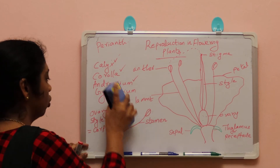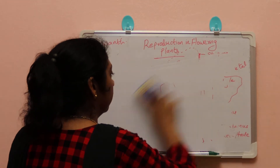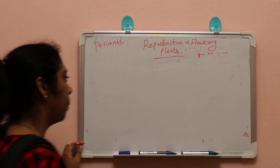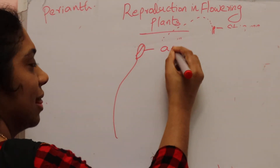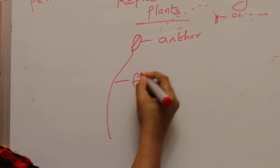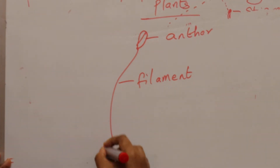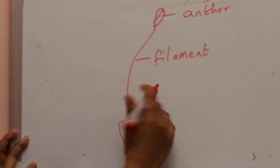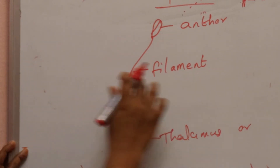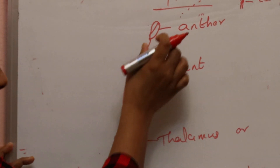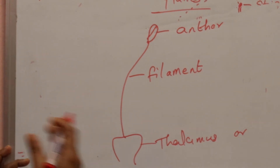Next we look at the structure of the stamen, the male reproductive part. The stamen consists of a filament with an anther at the top. The filament can be attached either to the thalamus or to the petal of the flower.